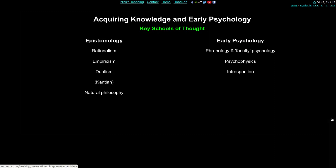The key schools of thought we're going to look at fall into two broad categories. On the epistemology side — that's the study of how we acquire knowledge — we're going to look at rationalism and empiricism, a little bit of dualism from Descartes, and then some alternative Kantian and Leibnizian views about epistemology. I'll also briefly mention natural philosophy — this idea of philosophy about nature, about biological and mental beings. And then in the second half, early psychology.